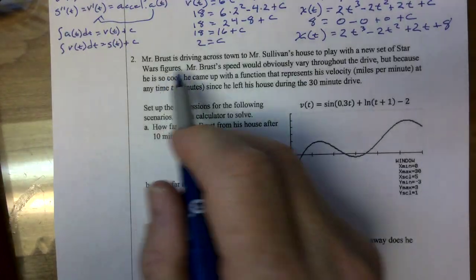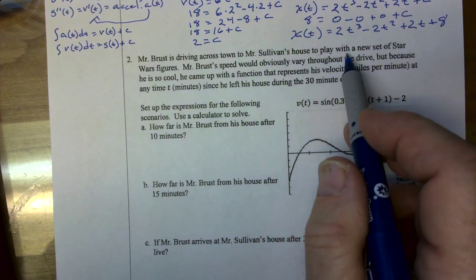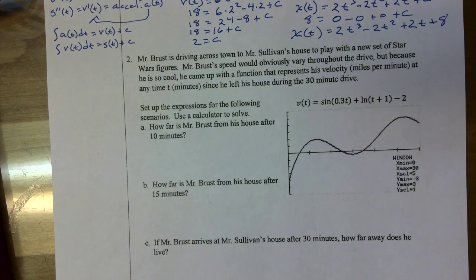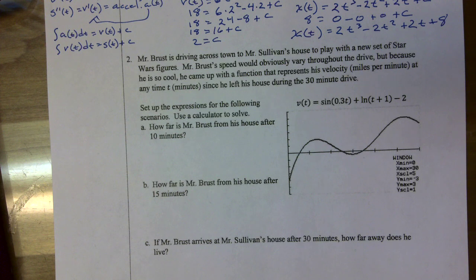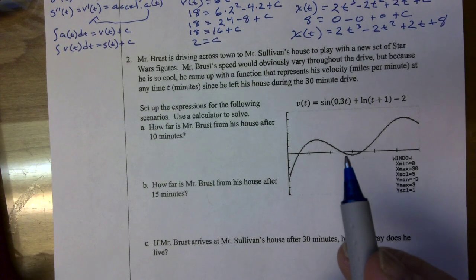The next problem: Mr. Bruss is driving across town to Mrs. Sullivan's house to play with a new set of Star Wars figures. Mr. Bruss's speed would obviously vary throughout the drive, but he came up with a function that represents his velocity in miles per minute at any time t since he left his house during the 30-minute drive.